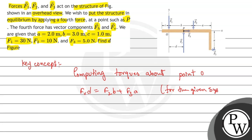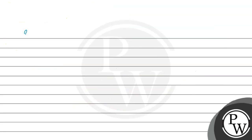And D will be F2 times B plus F3 times A, divided by FB. Let's see the solution.